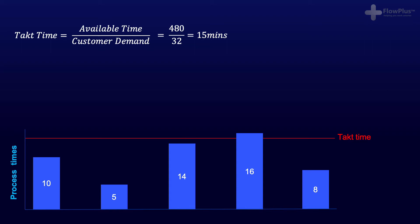The next thing we need to do is calculate the total work content across the entire process. To do this, we sum all the individual process times, and this would equal 53 minutes, so 10 plus 5 plus 14 plus 16 plus 8. This is the work content required across the entire process.